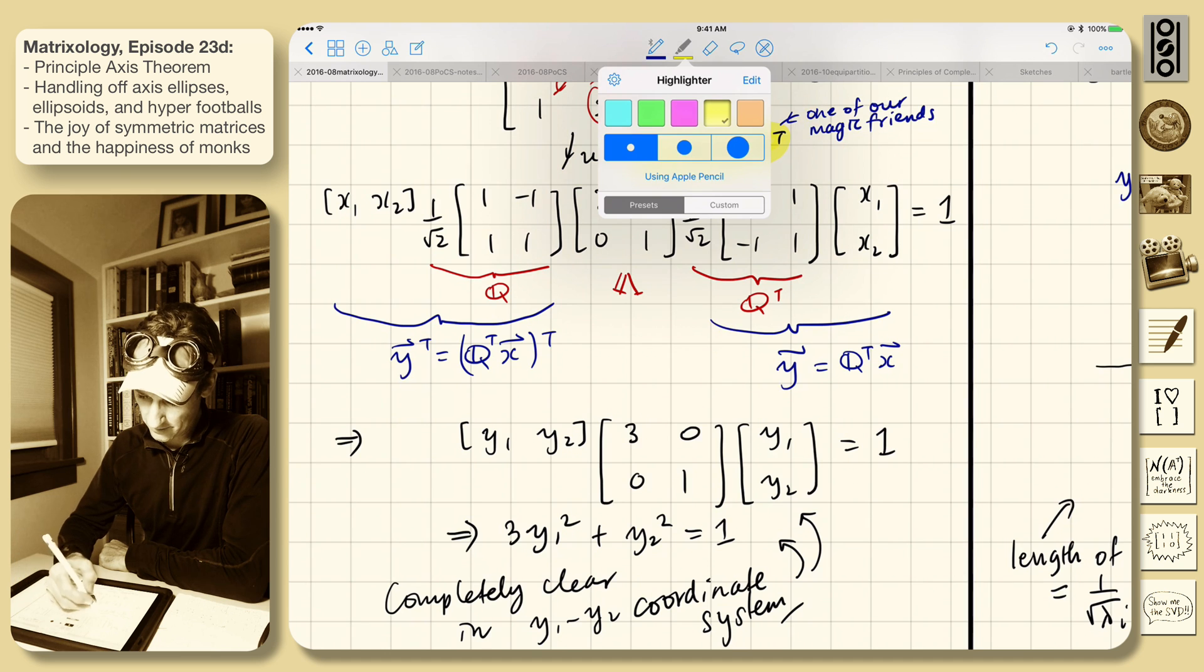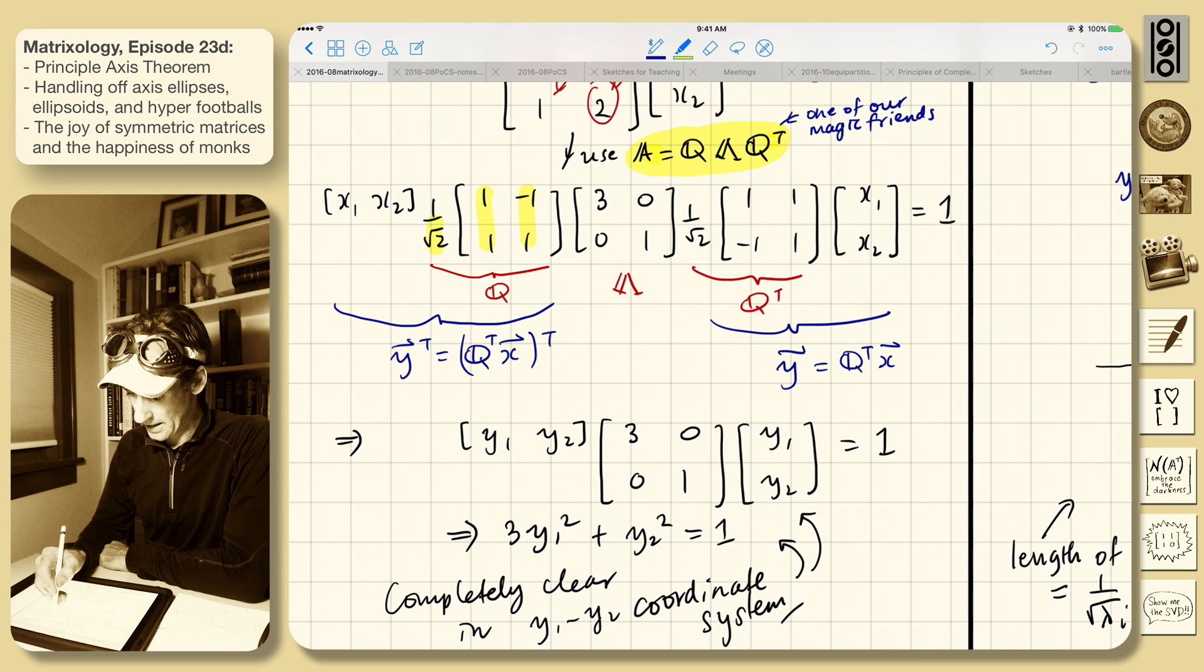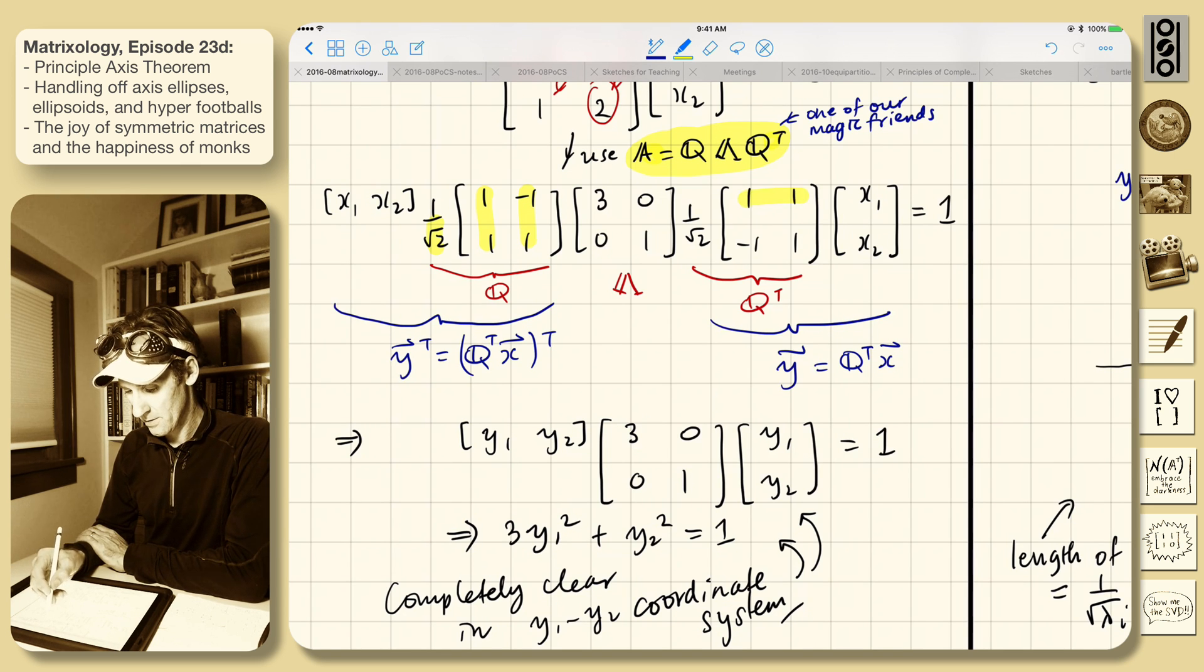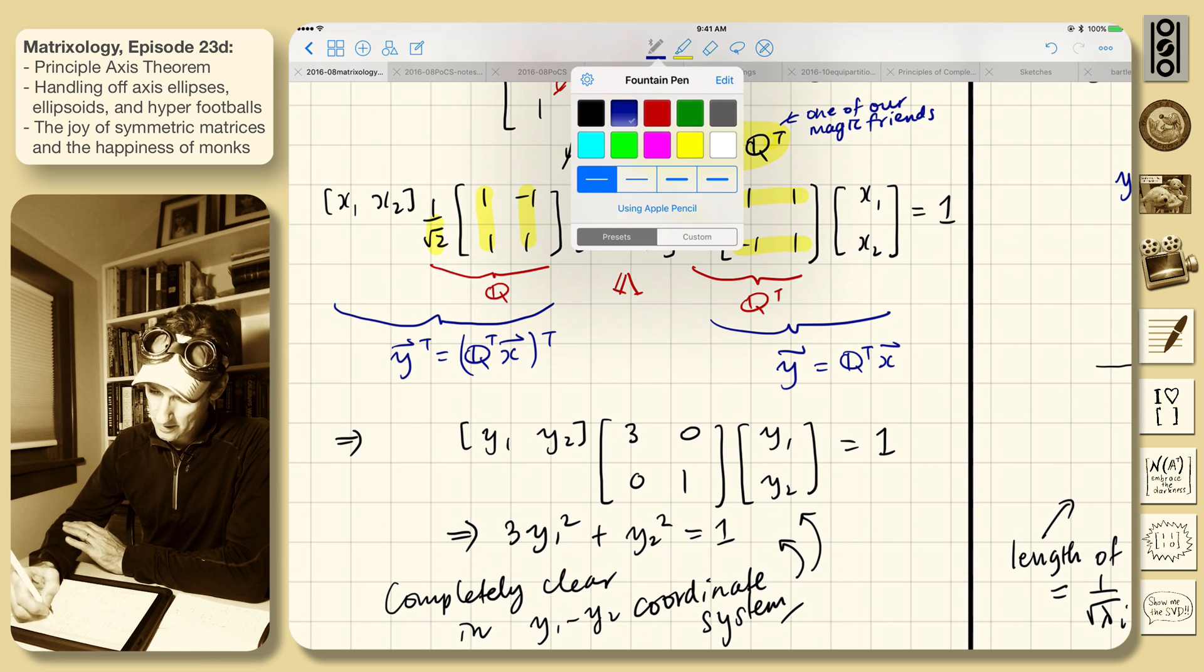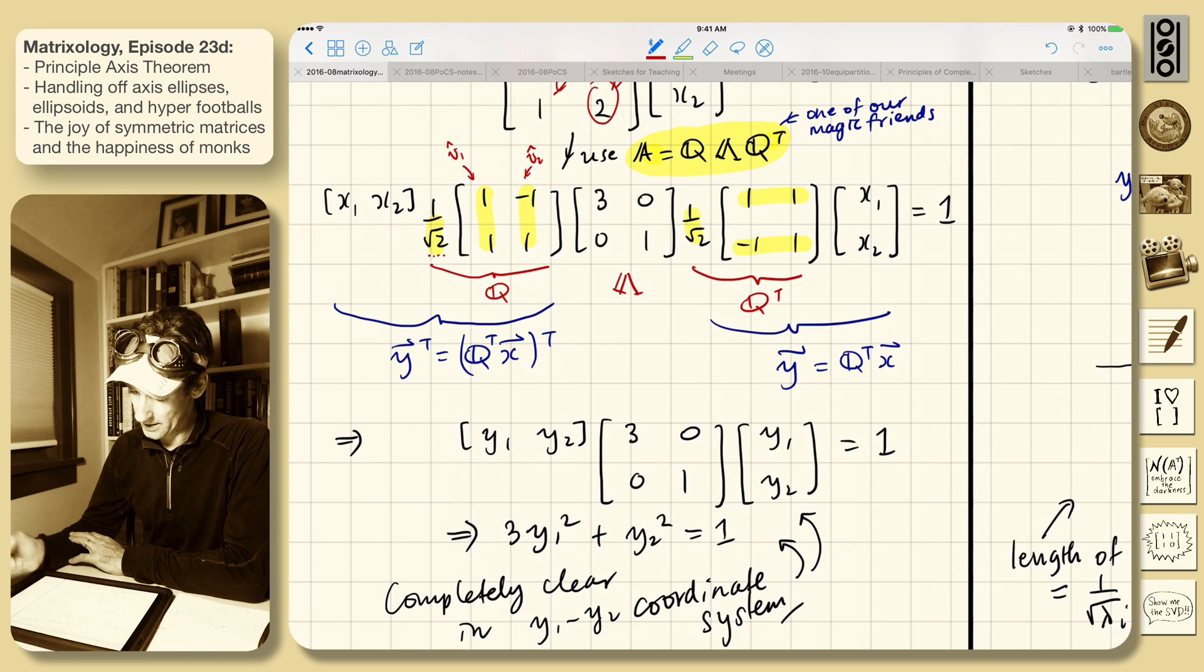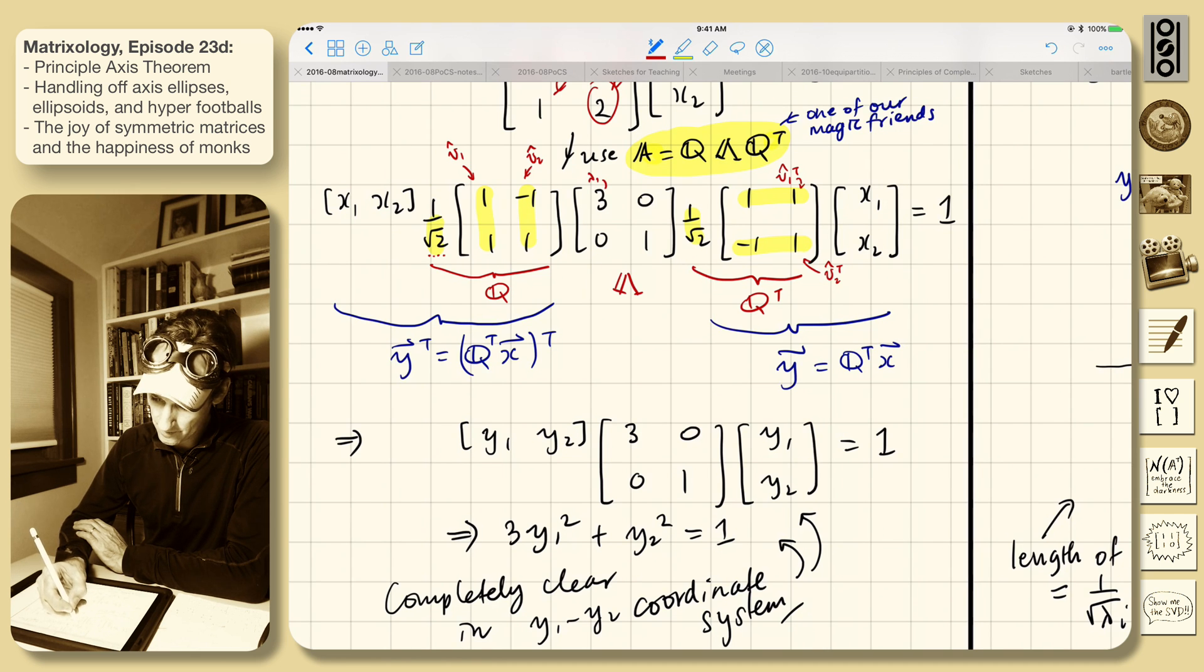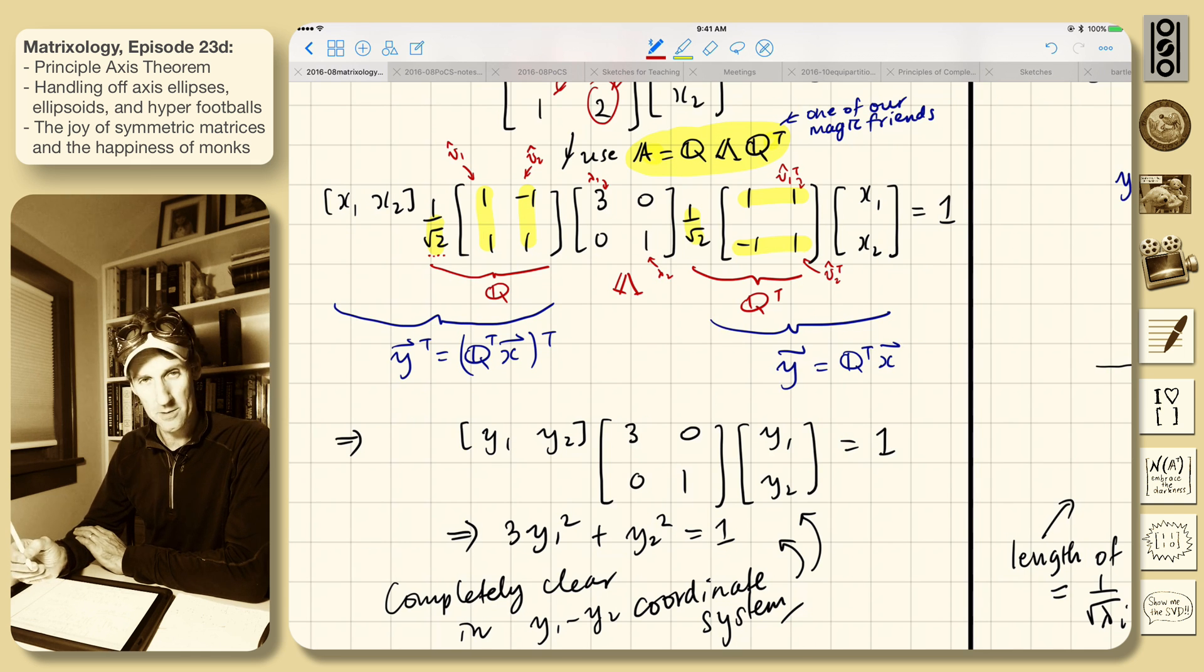So this is our Q. Here are our eigenvectors with the normalization sitting at the front. And because of magicness, here is the transpose. Right? So this is v1 hat and v2 hat. You know, I mean including this piece. Right? And then this is v1 transpose. And this is v2 transpose. This is lambda 1 and lambda 2. Delicious. Okay.